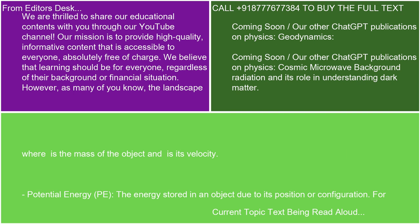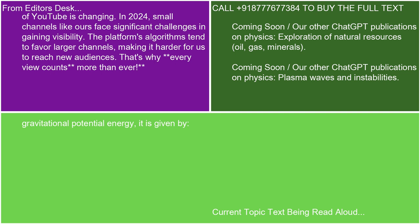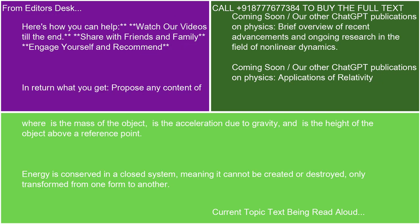Potential energy (PE) is the energy stored in an object due to its position or configuration. Gravitational potential energy is given by PE = mgh, where m is the mass of the object, g is the acceleration due to gravity, and h is the height of the object above a reference point. Energy is conserved in a closed system, meaning it cannot be created or destroyed, only transformed from one form to another.